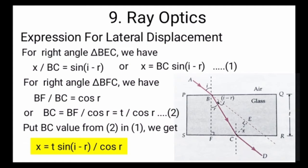Now putting the value of BC from equation number 2 into equation number 1, we get lateral displacement x equals t times sin(i - r) upon cos r.